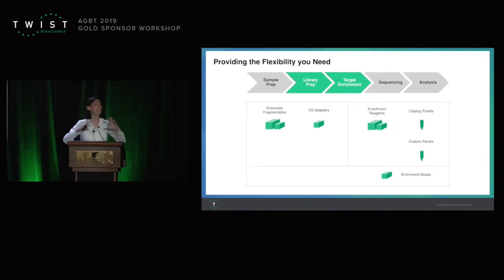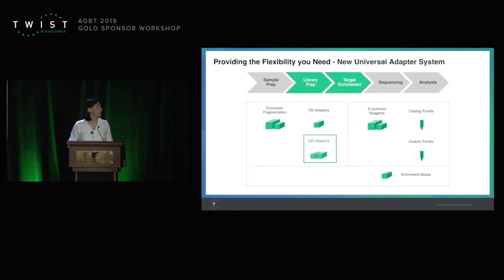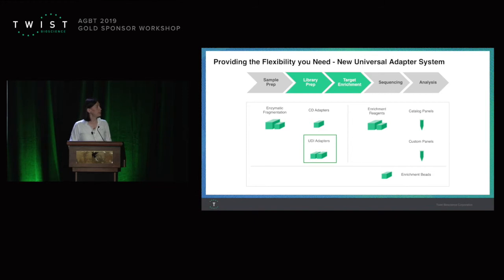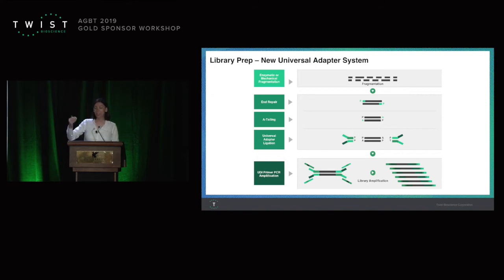Next I'd like to speak a little bit about flexibility. What was available so far is an enzymatic fragmentation kit, combinatorial adapters, enrichment regions for hybridization buffers, and any content you want — either catalog content or custom content — as well as some beads. We are adding to that workflow UDI adapters. The UDIs are actually added at the last step through PCR, which brings a few advantages. The first advantage is that it maximizes yield and removes primer dimer. You can see on the left that with Y-shaped adapters there is always some primer dimer — with our adapters that dimer is gone and you get much more yield, so you need fewer PCR cycles to proceed.